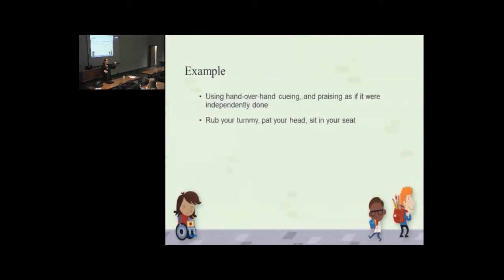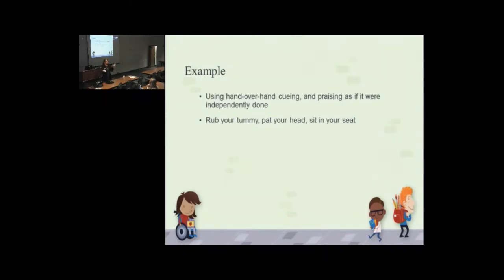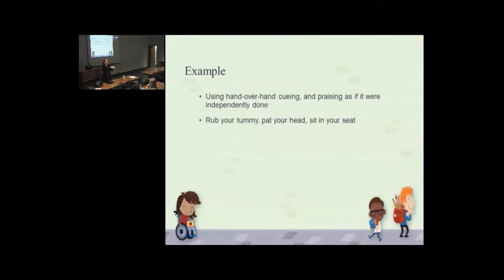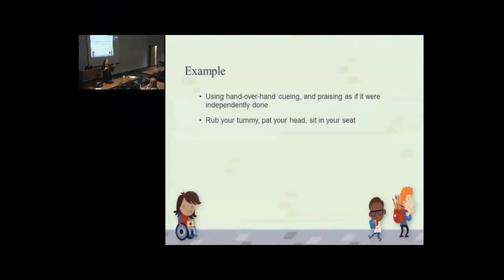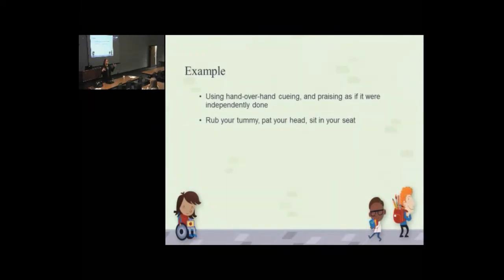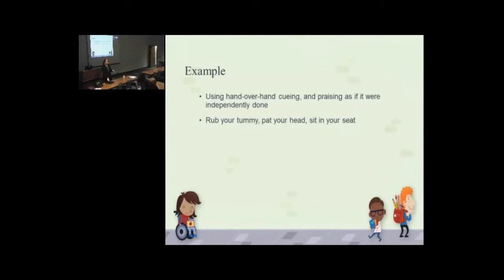And the one sitting in front has the reinforcer and presents the expectation, like, go like this. And then the one behind takes the little kiddo's hand and does it, and then you reinforce it as if the child did it independently. And then you gradually fade back the hand-over-hand prompting until the child is doing it independently. And you're reinforcing it. It's giving you something to reinforce.